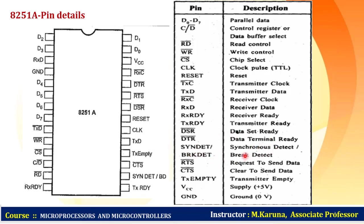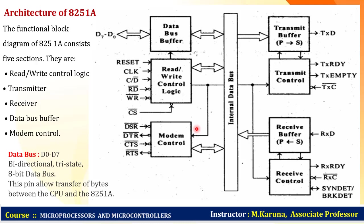Additional pins include transmitter ready, data set ready, data terminal ready — these are handshake control signals. Sync detect or break detection is used for synchronous and asynchronous data transmission. DSR, DTR, RTS (request to send), and CTS (clear to send) are modem control signals used when transmitting data over long distances. Transmitter empty, supply voltage, and ground complete the pin list.